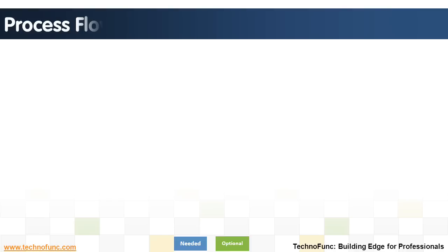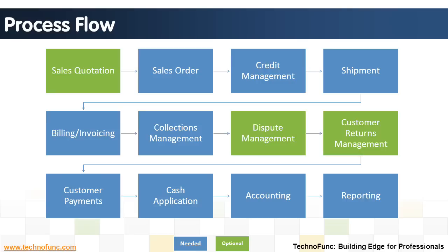Process flow for the OrderToCash process. Sales quotation: providing a quotation about the quality, price, and conditions of sale or product. Sales order: acknowledging the receipt of an order from the customer and its specifications. Credit management: ensuring the customer is credit-worthy and that credit can be extended to the customer.